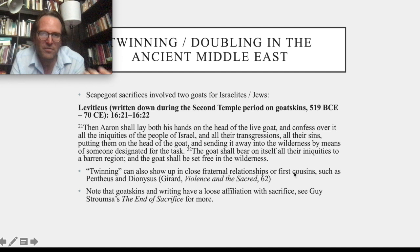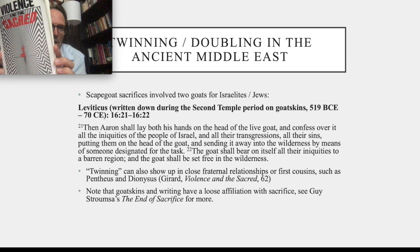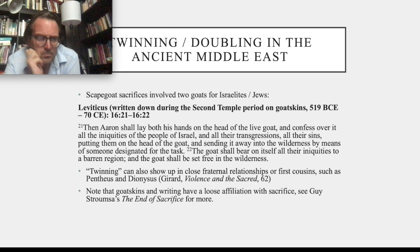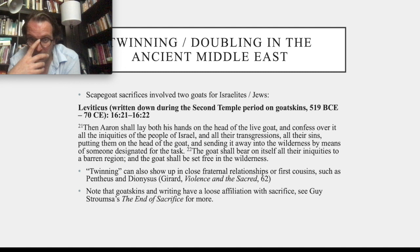This doubling also shows up in the close fraternal relationship between cousins in the Bacchae — Pentheus and Dionysus — which René Girard's Violence and the Sacred points out. Another book to look at is The End of Sacrifice by Gesundheit Strum, which deals especially with Jewish notions related to writing, sacrifice, the Torah, and the move from temple culture into post-temple culture, or rabbinical Judaism. There are a lot of fruitful comparisons to be made between these different cultures.